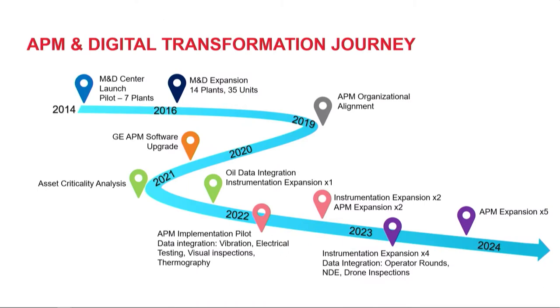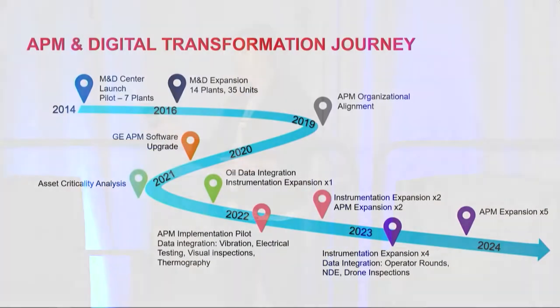Let's talk about our timeline. We actually have a pretty extensive history with Meridium over the last 15 years. My colleague Toni McIlvenna is going to cover that history in the next presentation. I want to focus on some key areas, specifically the last three years since I've been involved. Back in 2014 is really when Excel made that first big step forward in utilizing data and analytics, where we started up our M&D center. That was a pilot effort for seven plants — very successful. They used GE Smart Signal and expanded that to 14 plants and 35 units in 2016.